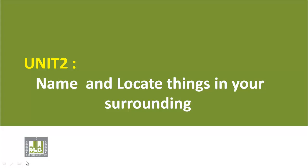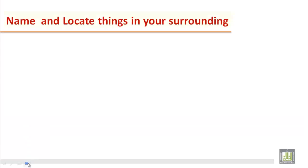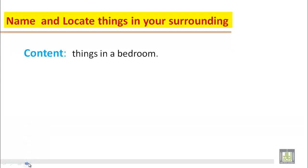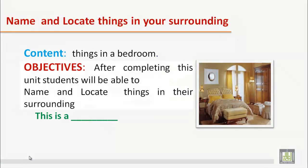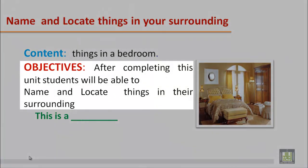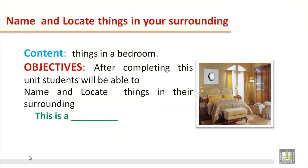Bismillahir Rahmanir Raheem. Dear students, welcome back. Today in Unit 2 we will study about how to name and locate things in your surrounding — wherever you are, you should know what the things are, where they are, and how to tell their position. The objective for this unit is that after completing it, you will be able to name and locate things in your surrounding.